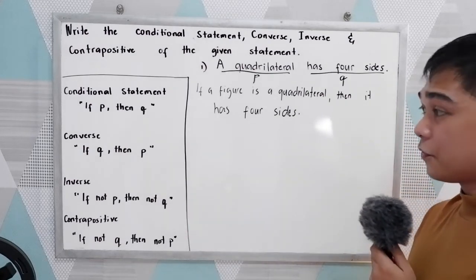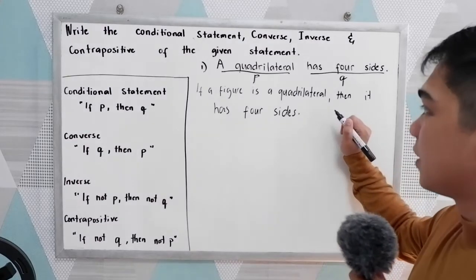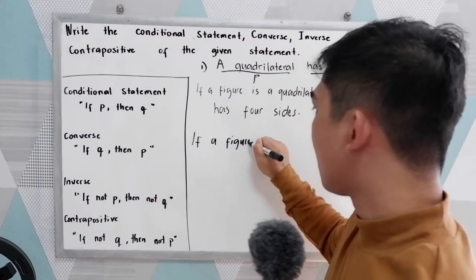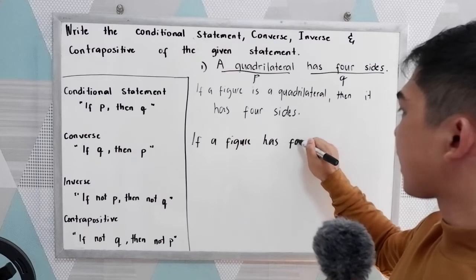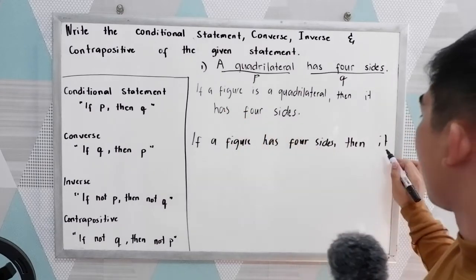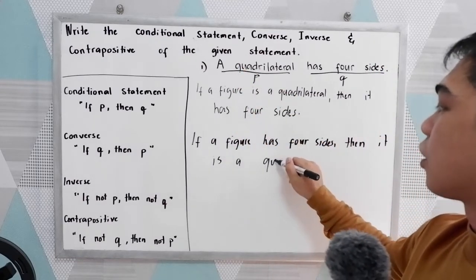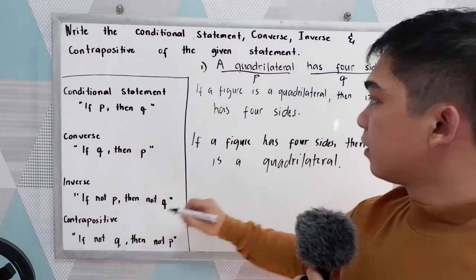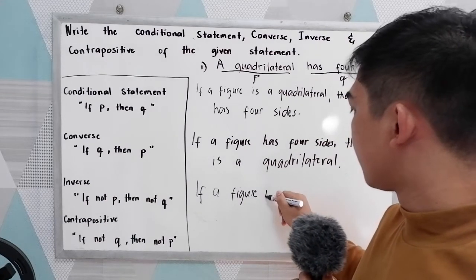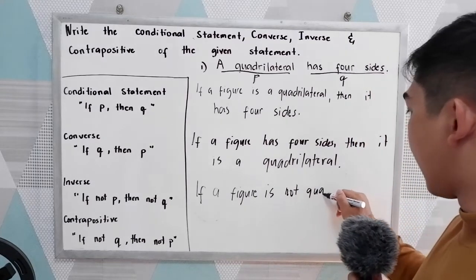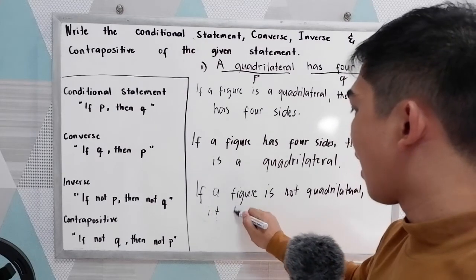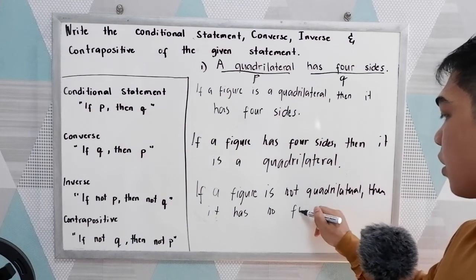The converse — if q then p: 'If a figure has four sides, then it is a quadrilateral.' The inverse — if not p then not q: 'If a figure is not a quadrilateral, then it has no four sides.'